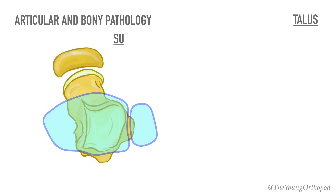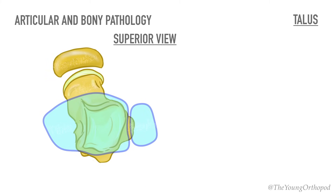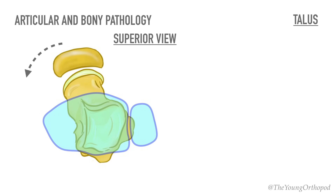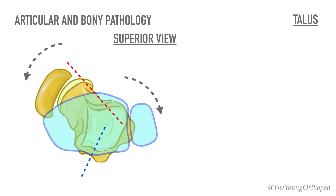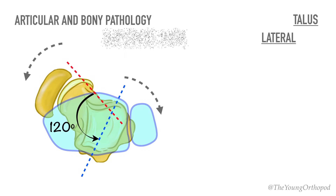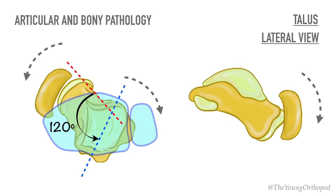Looking at the pathological changes in the talus: the normal talar head, neck and body angle is about 160 degrees. The talar neck is medially rotated relative to the ankle mortise, but the talar body is laterally rotated, leading to a decreased angle between the head and neck and the body of the talus to about 120 degrees. The head and neck of the talus are tilted medially and plantarward, and the talus is fixed in equinus.